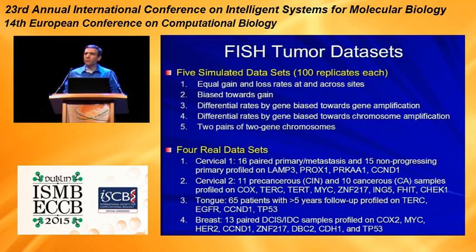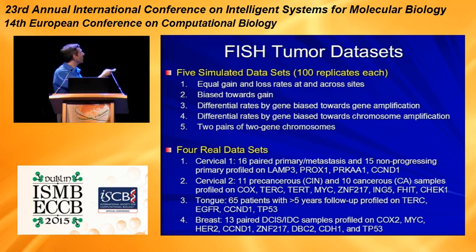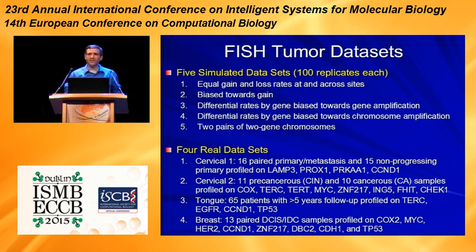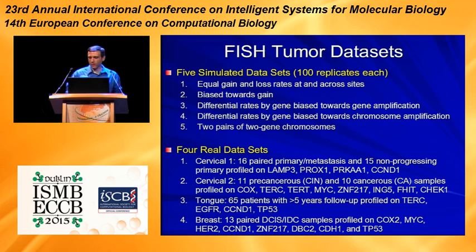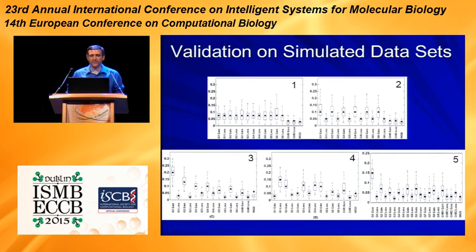If you want more detail, you can read the paper and really the supplement, which goes into great detail about the algorithms and the proofs. We then decided to test these on various data sets — a set of simulated data sets, which you often need for validating phylogenetic algorithms because you never really know the ground truth, and a set of real data sets of FISH data drawn from different cancers.